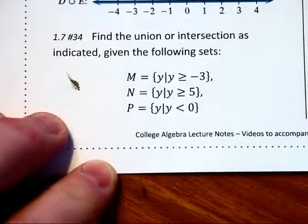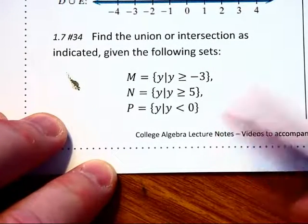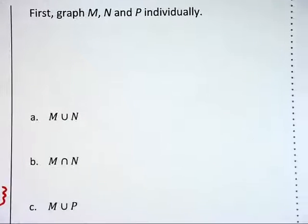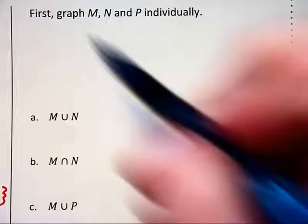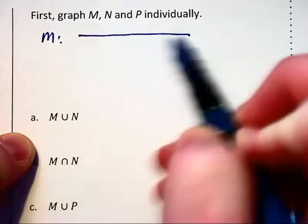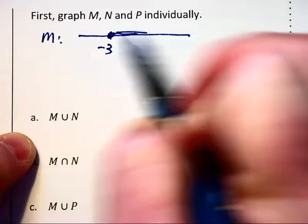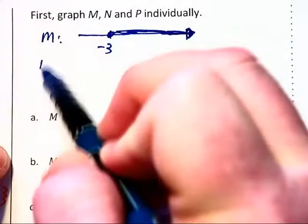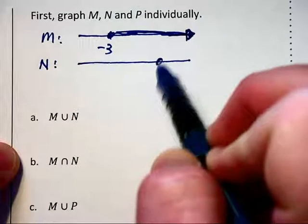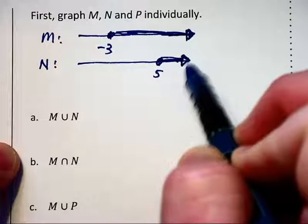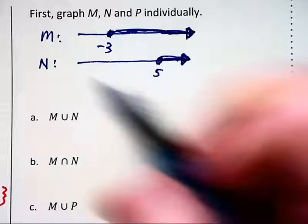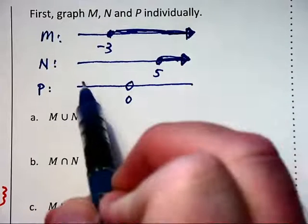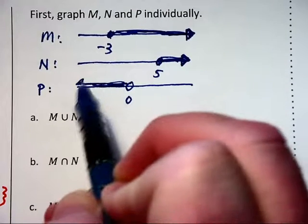Our next problem asks us, with these sets, to find the indicated intersections and unions. Set M is all values greater than or equal to negative three, so we have negative three with a solid dot and everything shaded to the right. For set N, this will be all values greater than or equal to five, with a solid dot at five shaded to the right. Set P is all values less than zero, so we have an open circle and shade all values to the left.